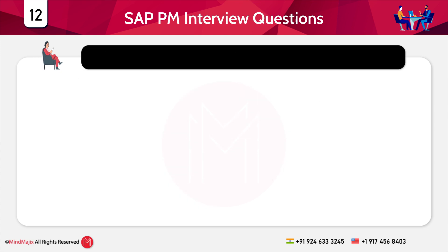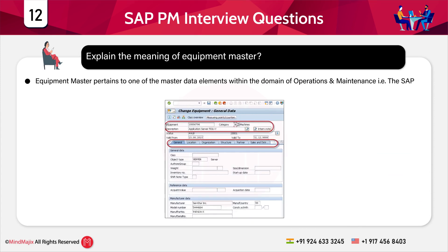The next question: explain the meaning of equipment master. Equipment master pertains to one of the master data elements within SAP Plant Maintenance. The business object equipment is an individual physical object to be maintained independently; it can be installed in a technical system or be part of one. You can manage all types of devices as pieces of equipment. Since many physical objects are managed as assets, the term 'piece of equipment' was chosen to avoid confusion with activated tangible assets. Each piece of equipment can be managed in a separate master record with an individual maintenance history.